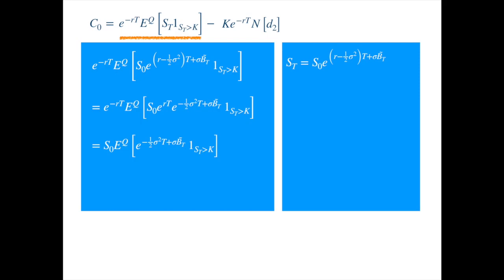The Cameron-Martin-Girsanov theorem tells us that if B tilde is a Brownian under the probability measure Q, and we shift the process by gamma...